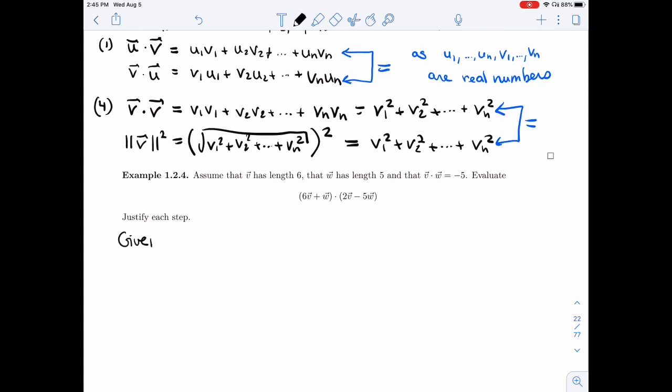Assume that V has length 6, W has length 5, and V dot W is minus 5, excellent.